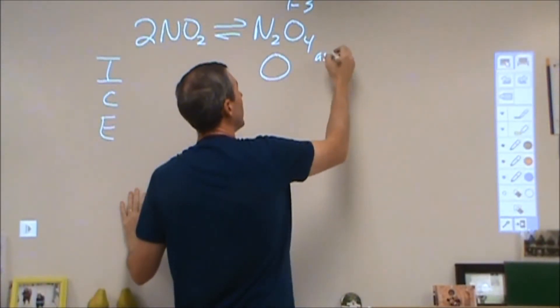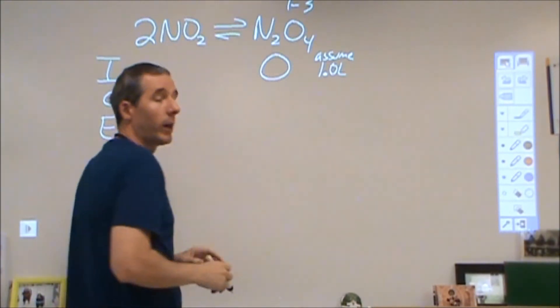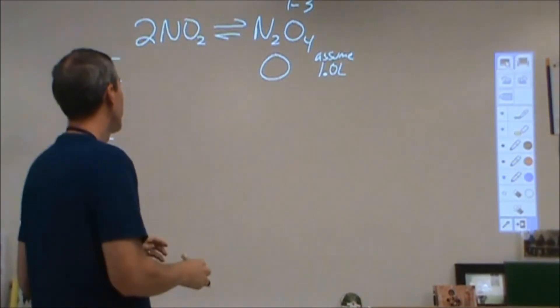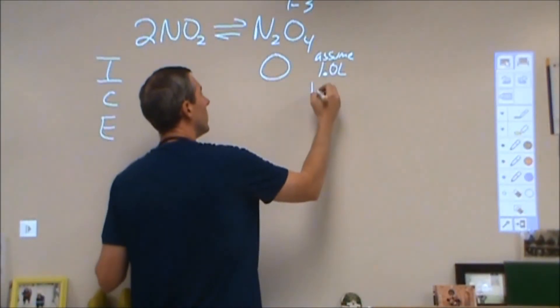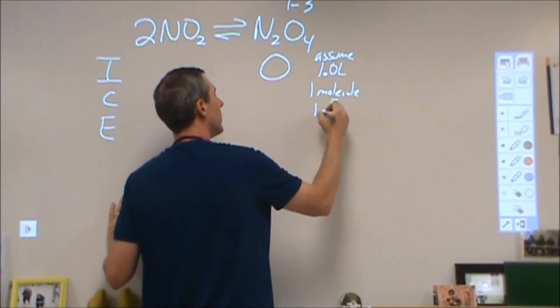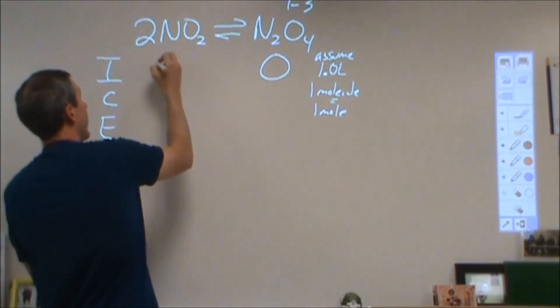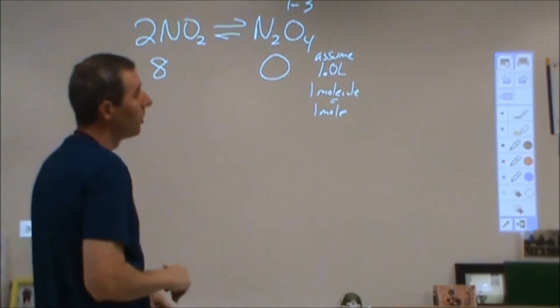Now I'm assuming I have a one liter volume, and I'm also assuming each particle drawn represents one mole. So I had eight of these, so I had eight molar NO2.